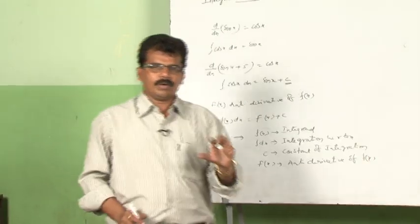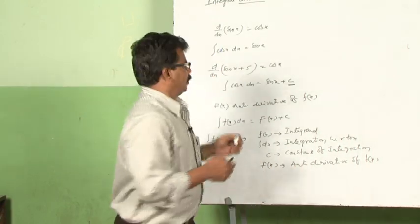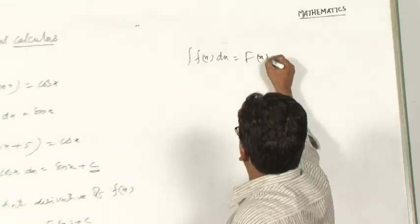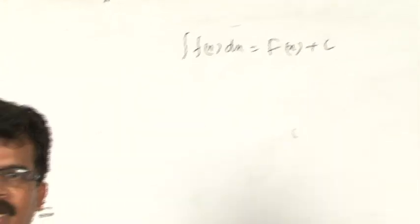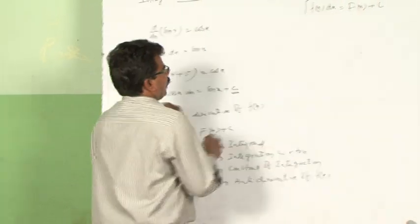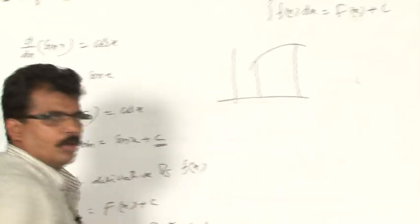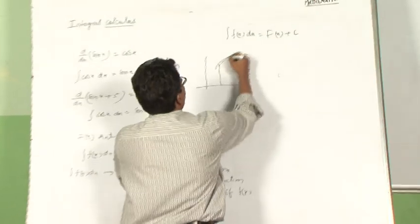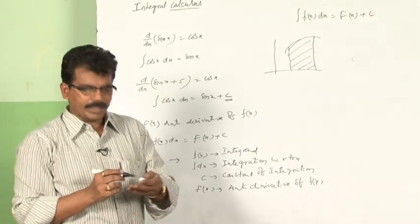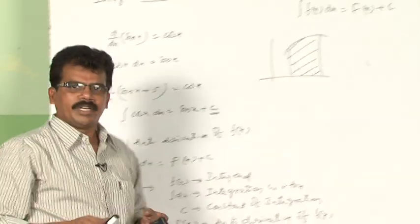When derivative is known, how to find the anti-derivative — how to find the original function — is nothing but integration. Integration is used to find an unknown function when the derivative is known. Also, it is used to find the area bounded by a curve with respect to the x-axis. This area represents integral from a to b of f(x) dx. The symbol integral represents sum, which we will discuss in definite integral.